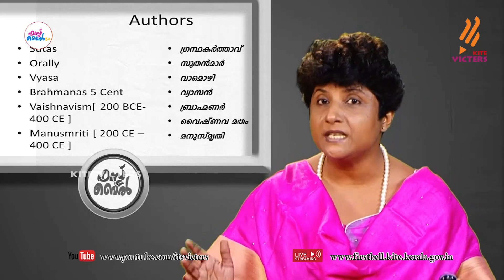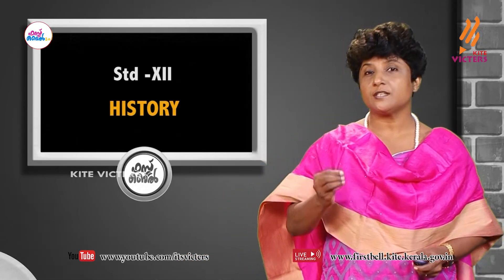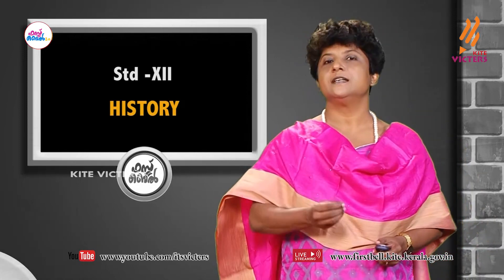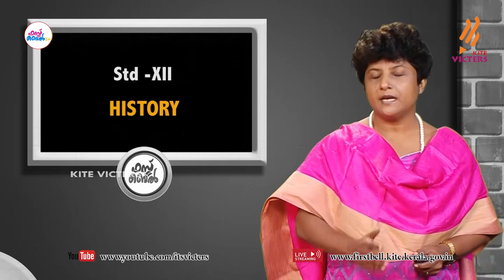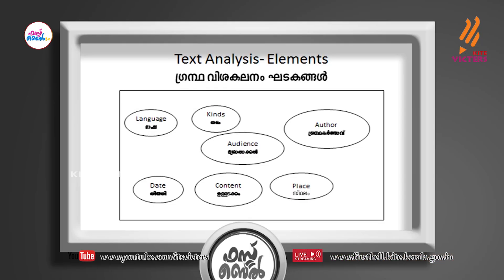For doing a text analysis, the elements are: language, kinds, audience, author, date, content, and place. Using all these elements and tools, one can carry out a historical analysis and determine the significance of a text.